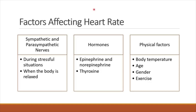The slower electrical activity with age may happen because of wear and tear on the electrical system of the heart. The next physical factor is gender — females have a faster heart rate than males because the female heart is typically smaller and therefore needs to beat faster. The last physical factor is exercise. During exercise, muscle cells need more oxygen, so the heart beats faster to supply oxygen to the muscle cells.